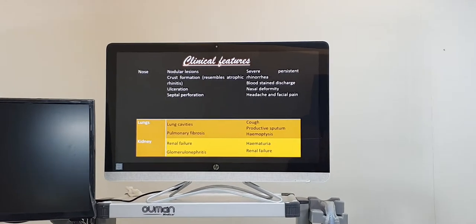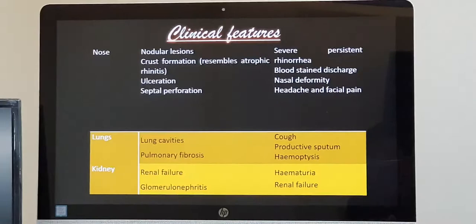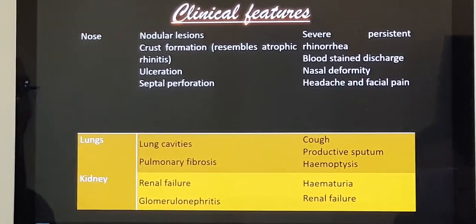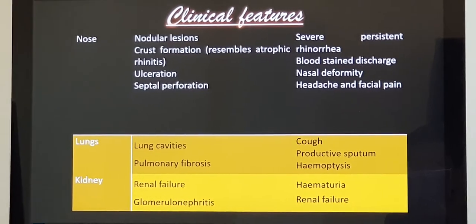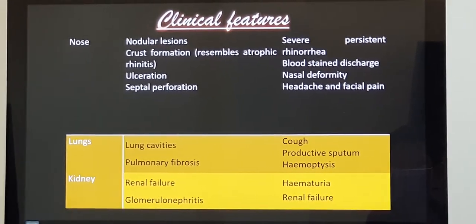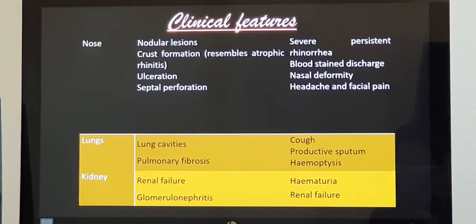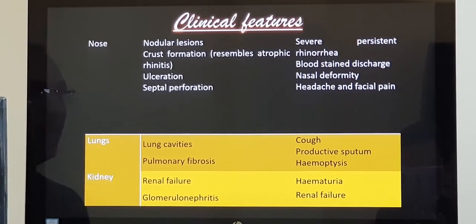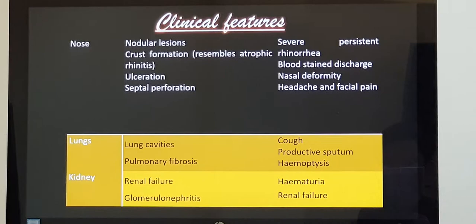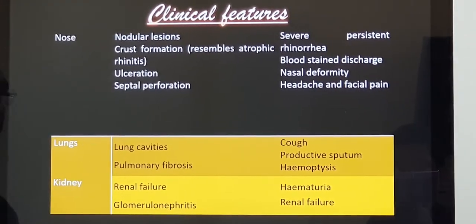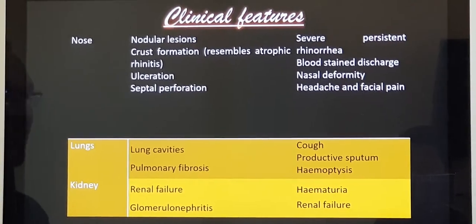Now coming to the clinical features. Like how I mentioned before, the three main parts which are mainly involved are nose, lungs and kidney. And in the nose it destroys the nose slowly and it forms nodules inside and ulceration. So the clinical presentation will be the patient starts with like an upper respiratory infection with nose block, running nose and slowly as and when the disease progresses.